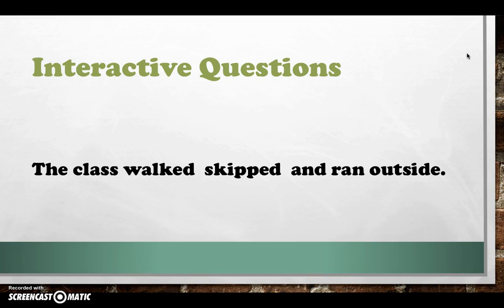The class walked, skipped, and ran outside. If you listen to me read that sentence, it should be pretty clear. Can you walk, skip? No, you can walk and skip. I'm going to put a comma after walked, a comma after skipped, but I do not put a comma after 'and'. So the sentence reads: the class walked, skipped, and ran outside.